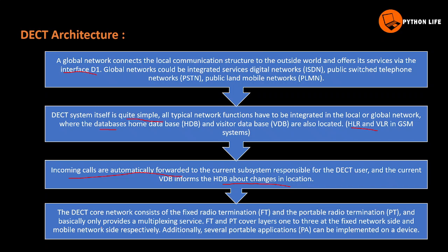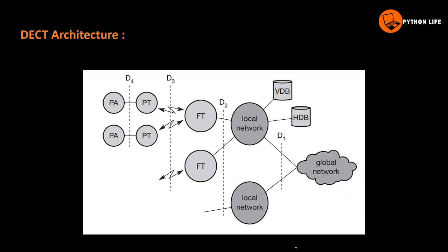The DECT core network consists of the Fixed Radio Terminator (FT) and Portable Radio Terminator (PT). FT and PT are the basic DECT main engine, providing multiplexing services. FT and PT cover layers 1, 2, and 3 on the fixed network side and mobile network side respectively.